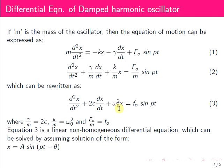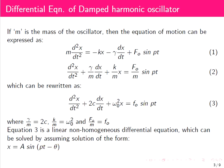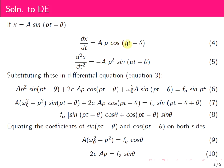Then k/m equals ω₀², which is the natural frequency of the oscillator, so ω₀ equals the square root of k/m. For F₀/m we substitute a small f₀. Equation 3 is the linear non-homogeneous differential equation, which can be solved by assuming the solution is of the form x equals A sin(Pt − θ), where A is the amplitude of the oscillator and θ is the phase difference between the driving force and the displacement. Differentiating, dx/dt equals Ap cos(Pt − θ) and d²x/dt² equals minus Ap² sin(Pt − θ).